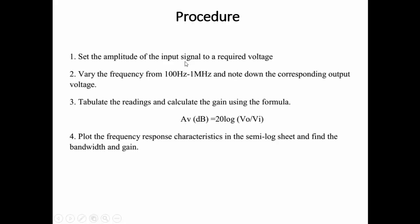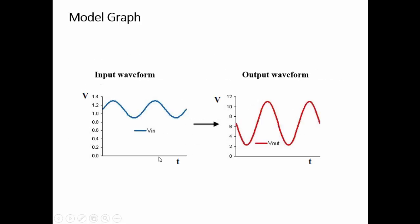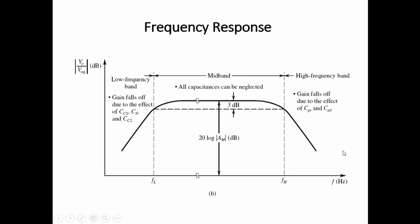The procedure: set the amplitude of the input signal to 100 millivolts, vary the frequency from 100 hertz to 1 megahertz, and note down the corresponding output voltage. Tabulate the readings and calculate the gain using the formula 20 log(V0/Vi) in decibels. Plot the frequency response characteristic and find the bandwidth and gain. The model graph shows the input small signal and the amplified output, along with the Bode plot of voltage gain versus frequency.